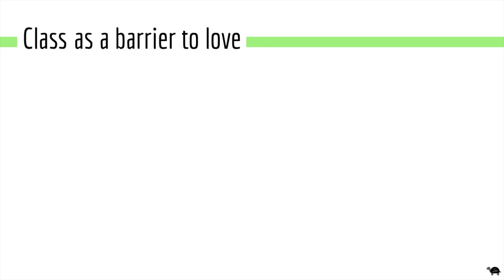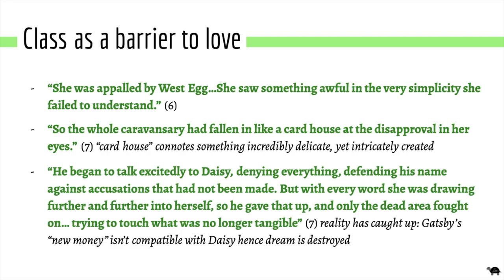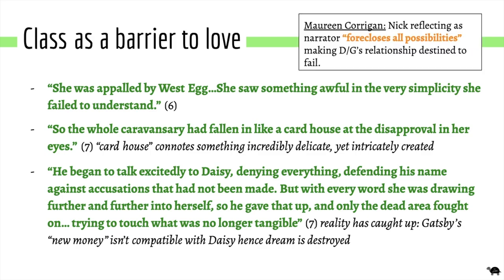Expanding further on class as a barrier to love, Gatsby's facade is likened to a card house, emphasising its fragility. Another quote notes that Gatsby was 'defending his name against accusations that had not been made.' The fact that Gatsby was already incredibly defensive even though things hadn't been brought to light emphasises how, despite their passionate relationship, they didn't truly touch upon the truth of how Gatsby made his money. On a podcast, Maureen Corrigan said that Nick telling the story 'forecloses all possibilities for Gatsby and Daisy's relationship to thrive.' You only hear the story from Nick, so Fitzgerald is emphasising how the relationship is destined to fail — you're supposed to see the flaws in it as a dream too idyllic to succeed.